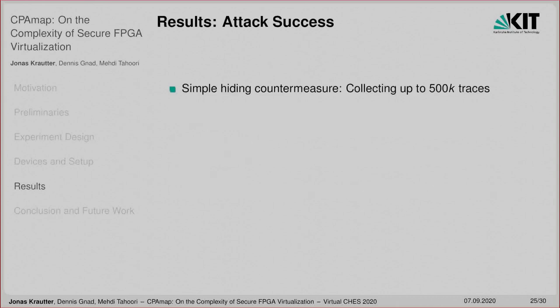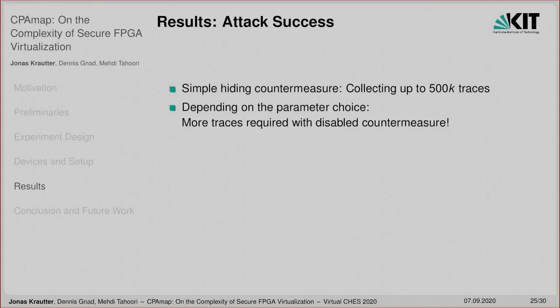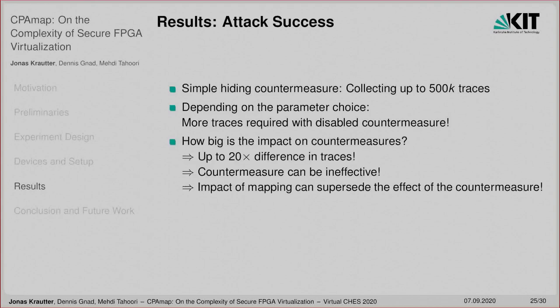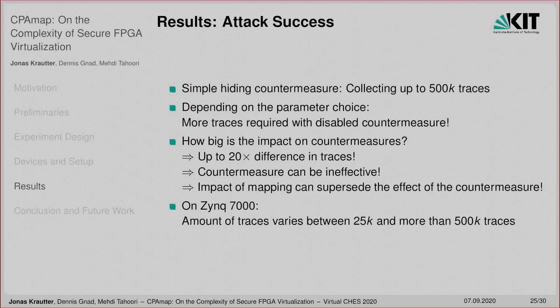When investigating the impact of design parameters on our simple hiding countermeasure, we collected up to 500,000 traces. Depending on the parameter choice, we found that even more traces were sometimes required with the countermeasure disabled than with it enabled. The differences in required traces for a successful attack were still up to 20x, and in some cases the countermeasure could be entirely ineffective. Moreover, the impact of mapping can supersede the effect of the countermeasure, increasing the required traces more efficiently than the countermeasure itself. On the Zynq 7000, the required traces vary between 25,000 and more than 500,000.